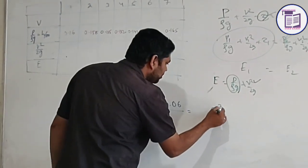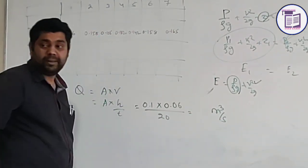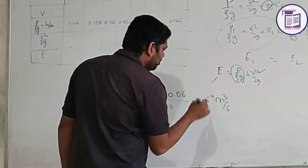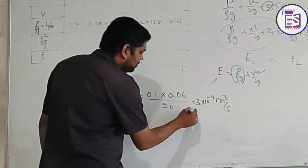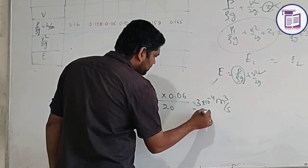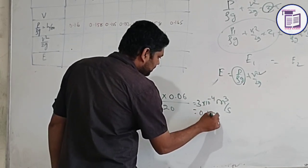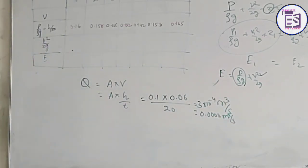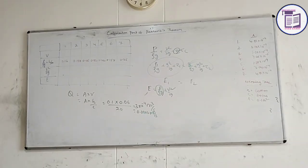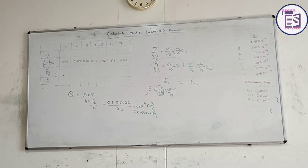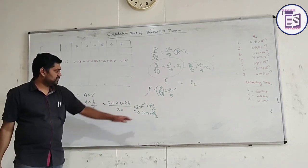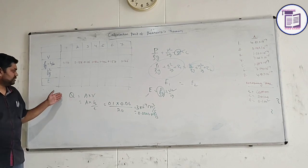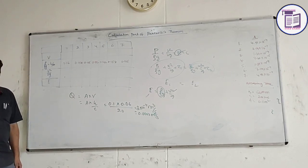The discharge value is 3 into 10 to the power minus 4 meter cubed per second, which equals 0.0003 meter cubed per second.